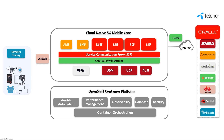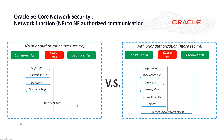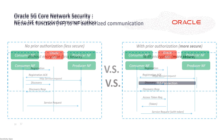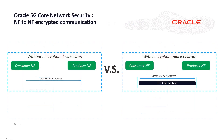In order to secure the communication between network functions, we have implemented access token functionality from Oracle, and we have leveraged TLS to ensure encrypted network function to network function communication.